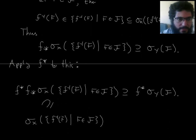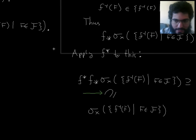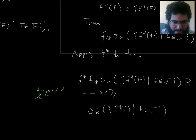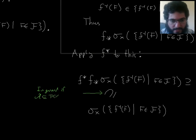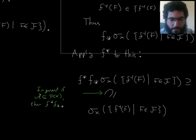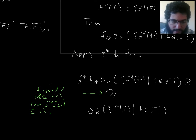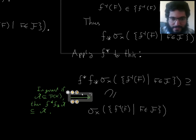So at least I have this inclusion. This could be described as a general principle: in general, if you have any collection of subsets of x, and you take your function f from x to y and push forward this thing and then pull it back, then that should be a subset of the original thing. That's something you can prove in general, if you want to — I'll leave that as an optional exercise.